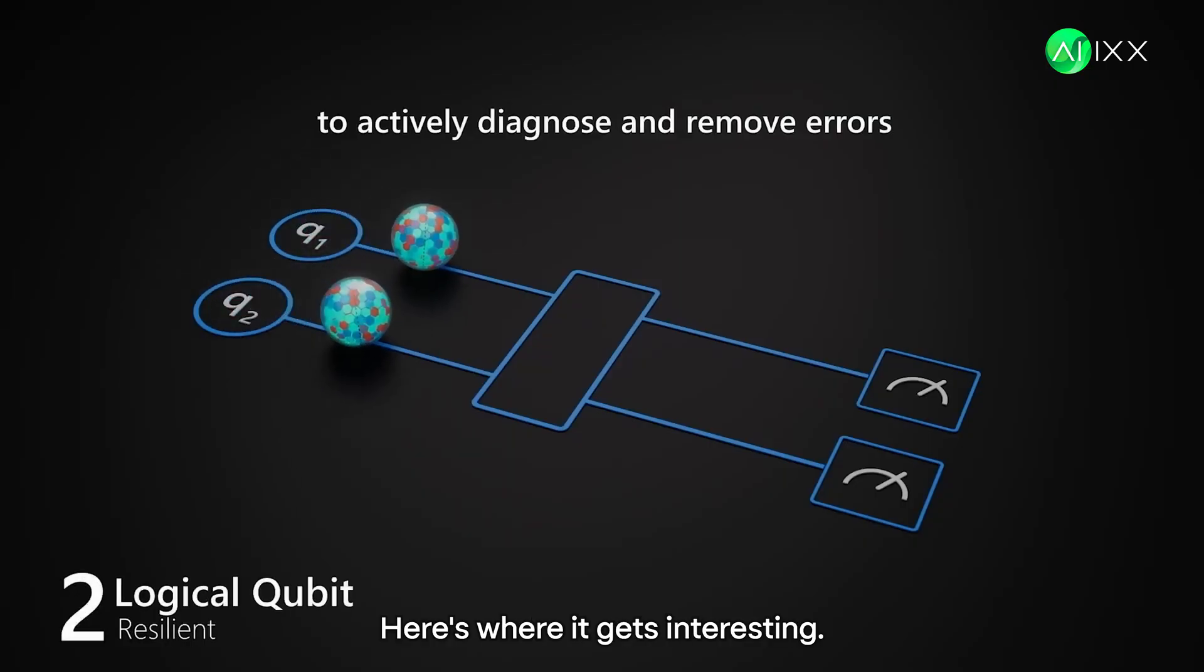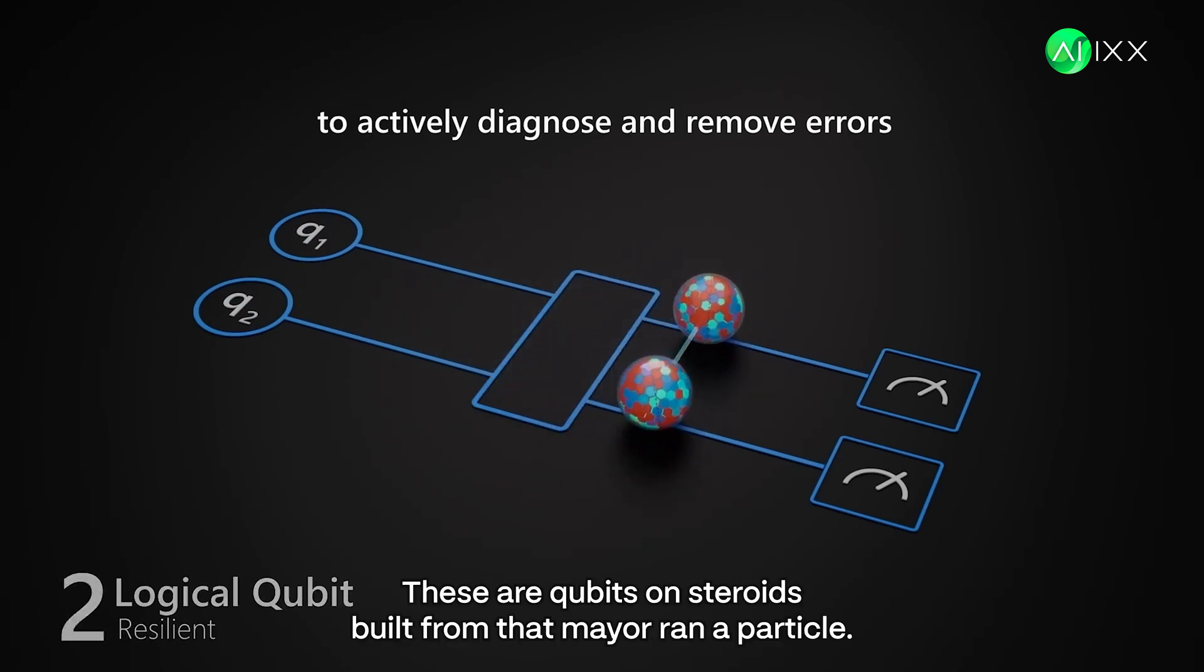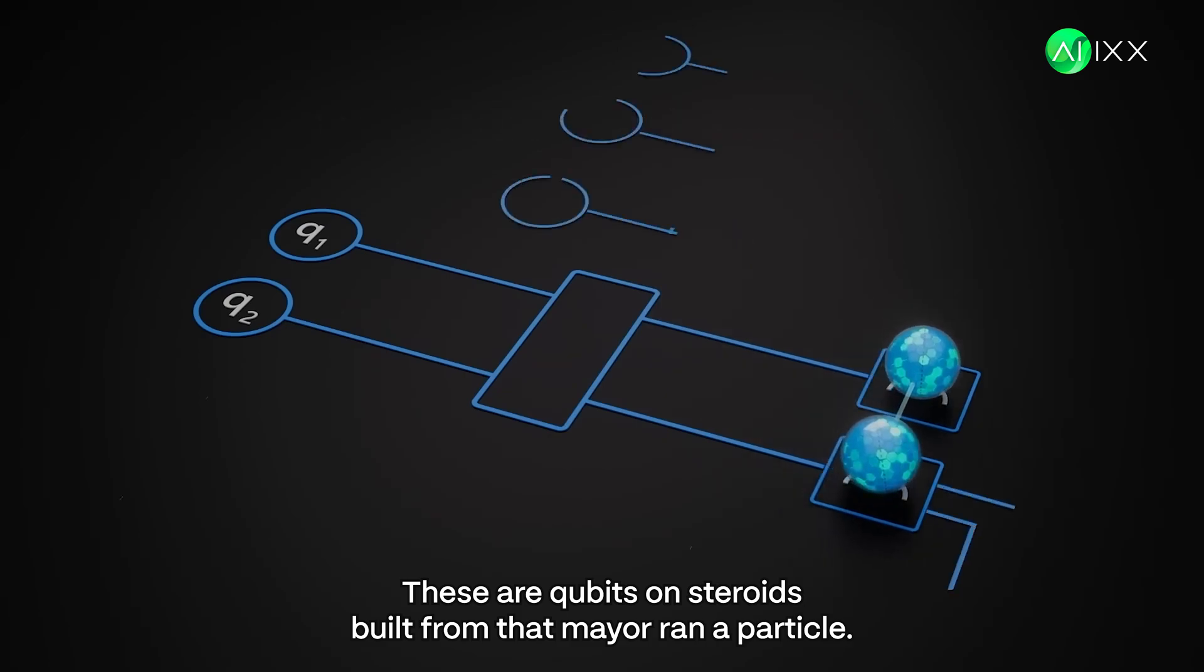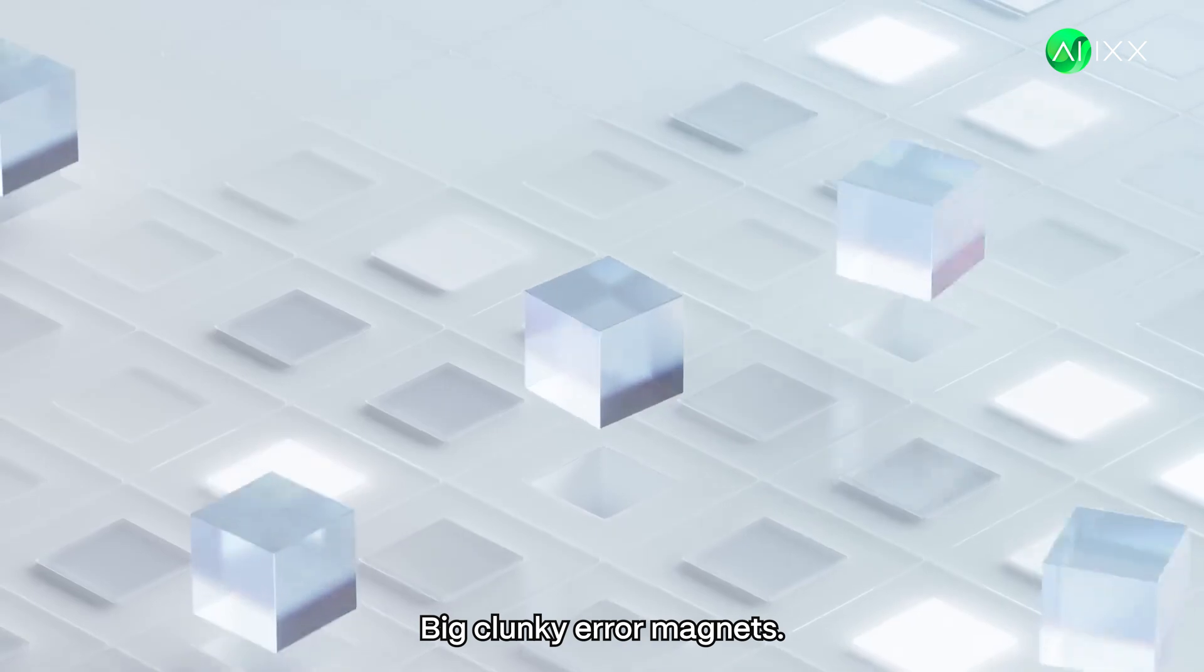Here's where it gets interesting. The Mayorana One runs on topological qubits. What? These are qubits on steroids, built from that Mayorana particle. Old qubits? Big, clunky error magnets.